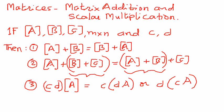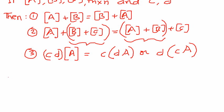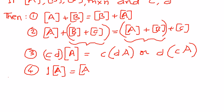The next property is: if we multiply a matrix by one, it is not going to change any of the elements in matrix A. It is still going to remain as matrix A with all the elements in there.